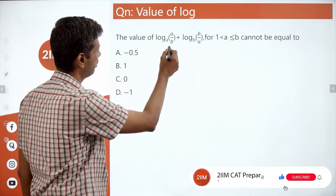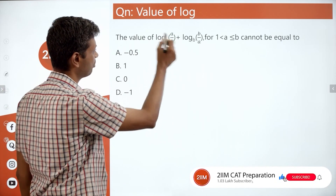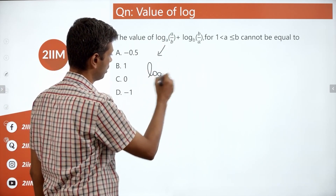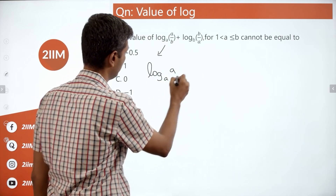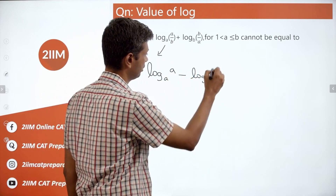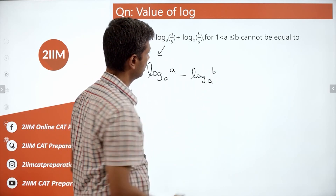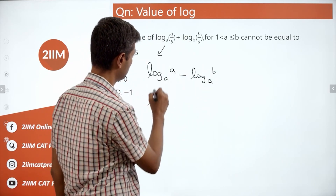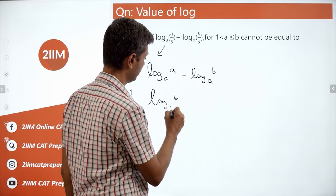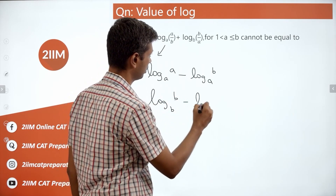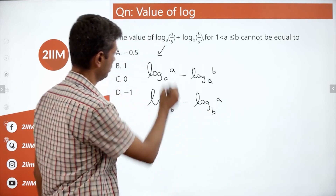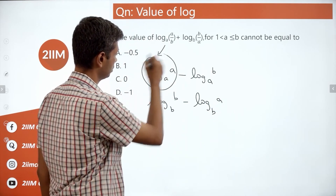First, we know log of a by b is log a minus log b. So this one will simplify as log a to the base a minus log b to the base a. This one we can write as log b to the base b minus log a to the base b. This is one, this is one.